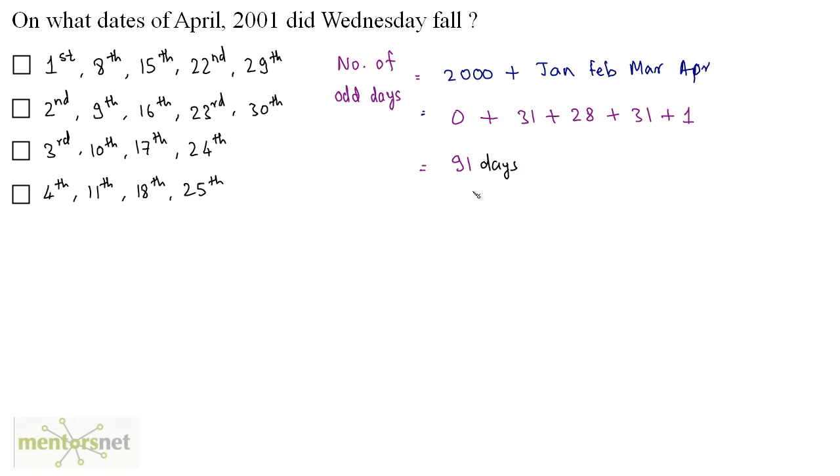So 91 days is the number of odd days. Now we'll have to find out how many weeks and days are 91 days. So we'll have to divide 91 by 7 which gives you 13 weeks. So 13 weeks and no extra days remain because 91 days are exactly forming 13 weeks. So 0 days. Now 0 odd days mean a Sunday. So 1st of April 2001 is a Sunday.